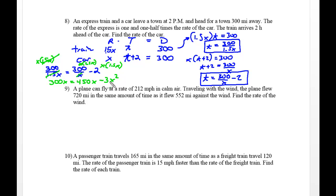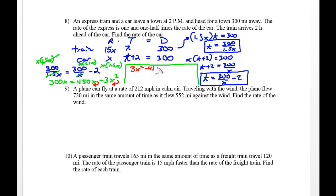Since I have an equation with x and x squared, I need to use factoring methods. I'll bring everything to the left: 3x squared minus 450x plus 300x equals zero, which simplifies to 3x squared minus 150x equals zero. Factoring out the common term 3x, I get 3x times (x minus 50) equals zero.